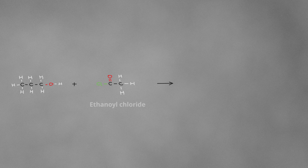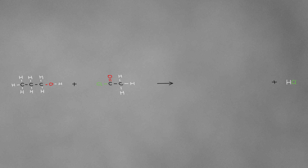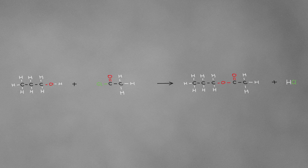Now I'm going to do the same reaction, but instead of using ethanoic acid I'm going to use ethanoyl chloride. This is the exact same molecule but we've just swapped the OH for a chlorine atom. The same ester will form as before, but instead of H₂O coming off it'll be HCl. Just as before, everything that's left behind will snap together to give propyl ethanoate. It's pretty much the exact same reaction.